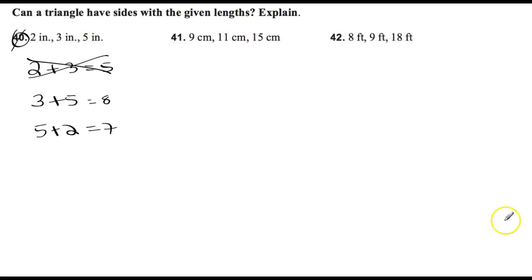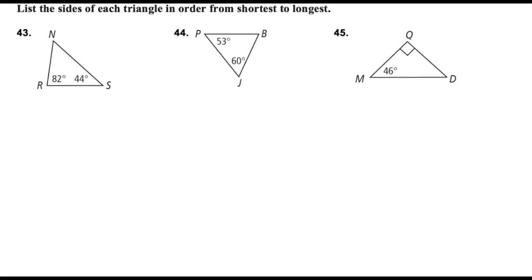I'll let you try out 41 and 42 on your own. Number 43 here says, list the sides of each triangle in order from the shortest to the longest. So here's a question where they're giving you two angles. You've got to figure out the third. So we know that if we take 180 and subtract 82 from it, I'll be given 98. Subtract 44 from that, and you get 54. So this angle up top is 54.